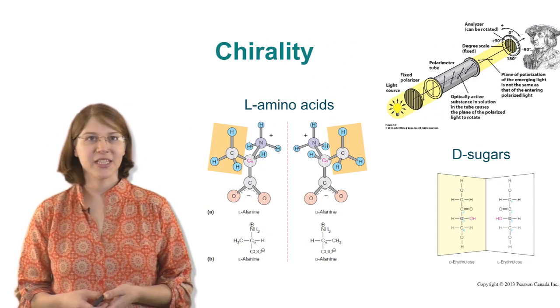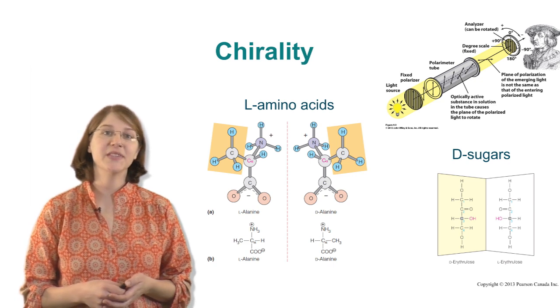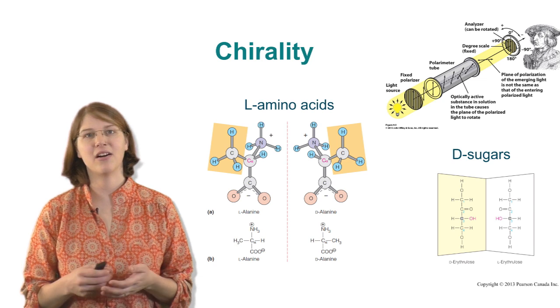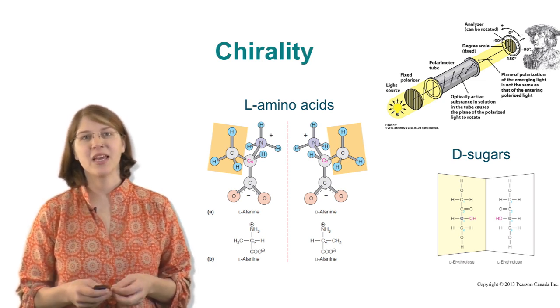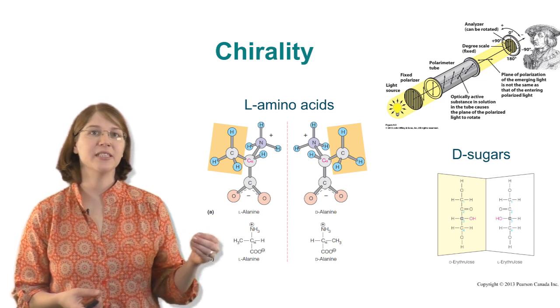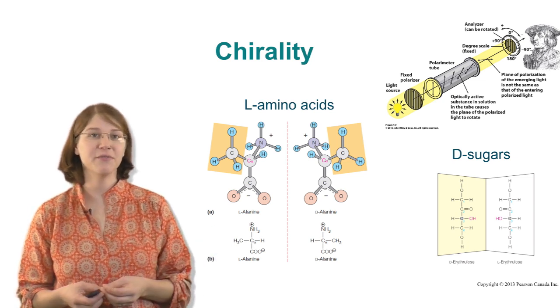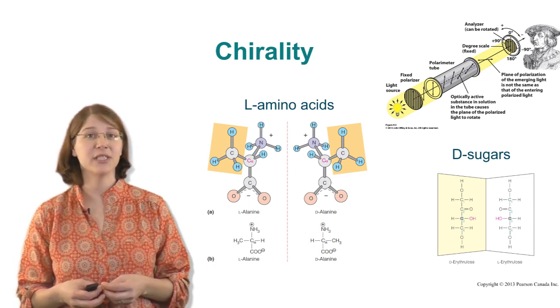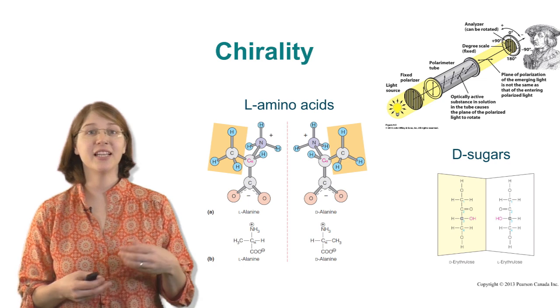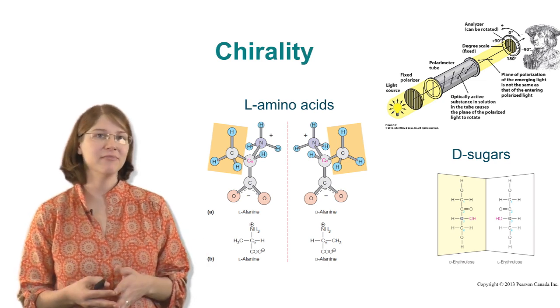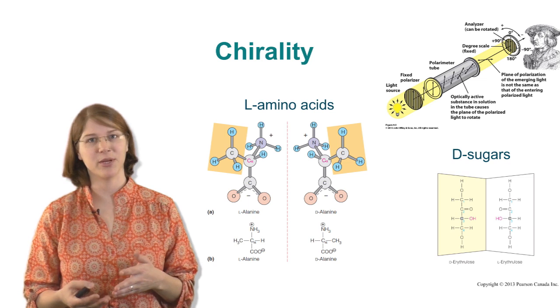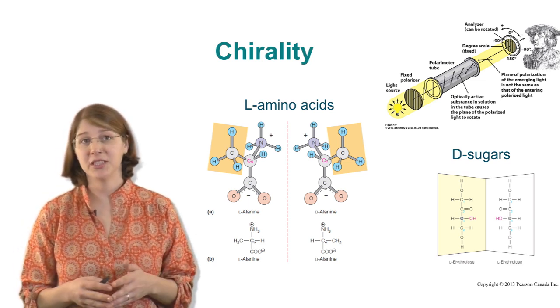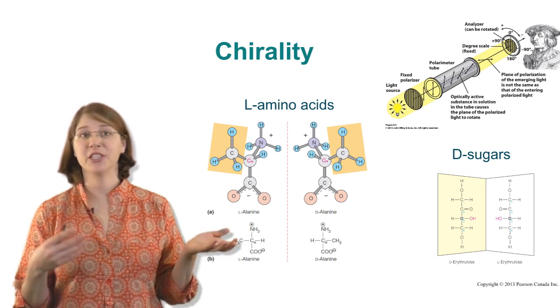The first thing that all living things have in common is that we use L-amino acids in our proteins and we use D-sugars in our sugars and in our nucleic acids. This was first discovered a very long time ago when scientists took purified forms of biomolecules, placed them into a container, and saw how they rotated polarized light. When they rotate to the left they're called L molecules, and when they rotate to the right they're called D molecules, and you can see that the molecules are mirror images of each other between the left-handed version and the right-handed version.